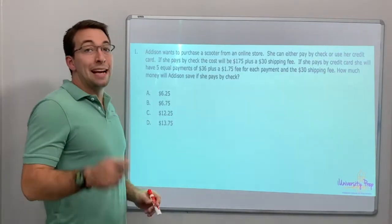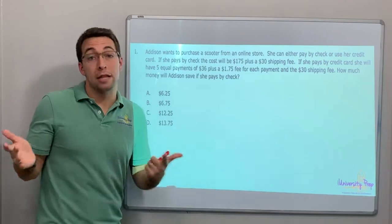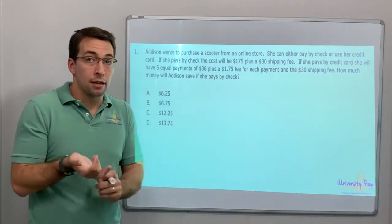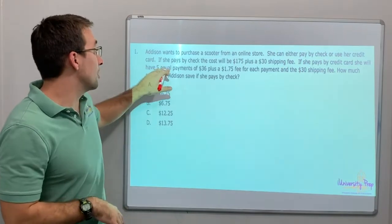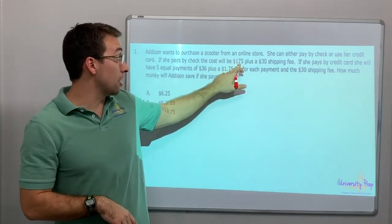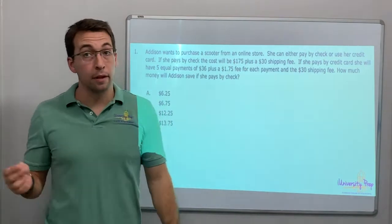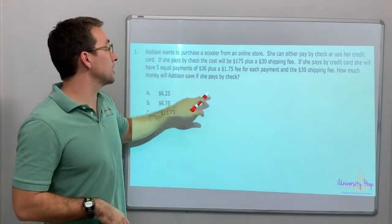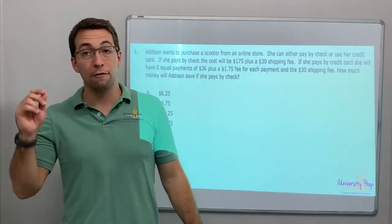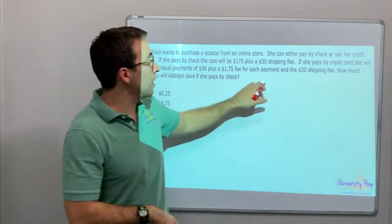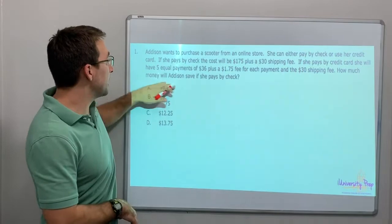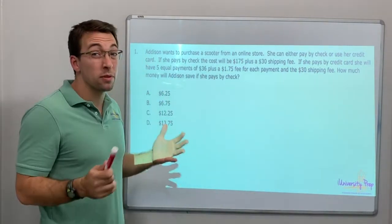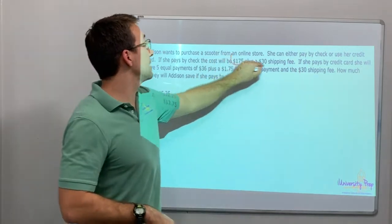Question number one: Addison wants to purchase a scooter from an online store. She can either pay by check or use her credit card. If she pays by check, the cost will be $175 plus $30 shipping. If she pays by credit card, she will have five equal payments of $36 plus $1.75 fee for each payment and $30 for shipping. How much money will Addison save if she pays by check? So multiple steps. We have to add this together.